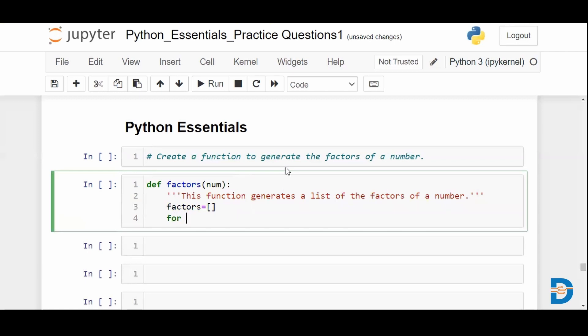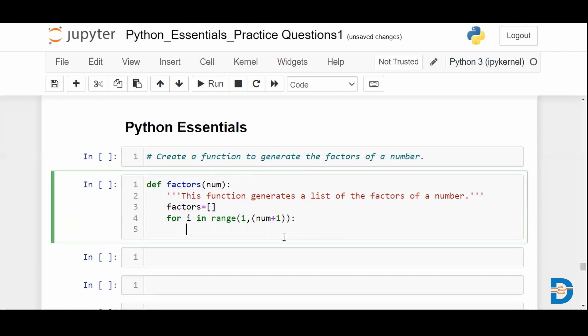So for i in range—we're beginning from one, we don't want zero. Beginning from one, if we're talking about a range, we need to go up to the number itself, so we'll give num plus one so that we stop at num. And for this range we provide an if condition.